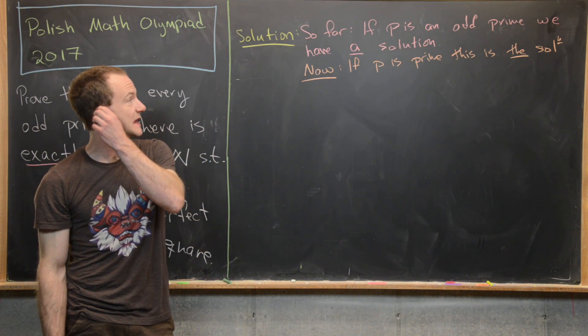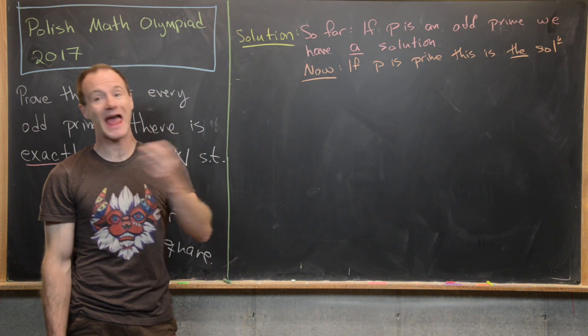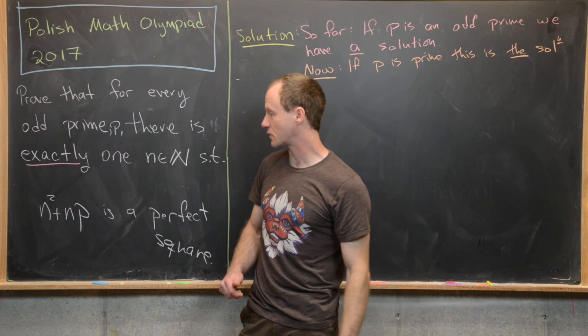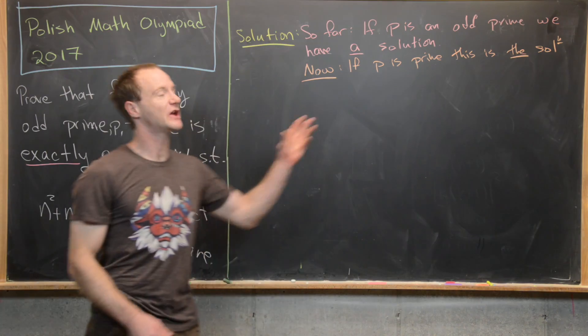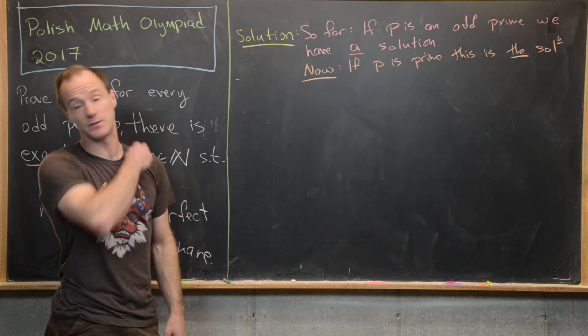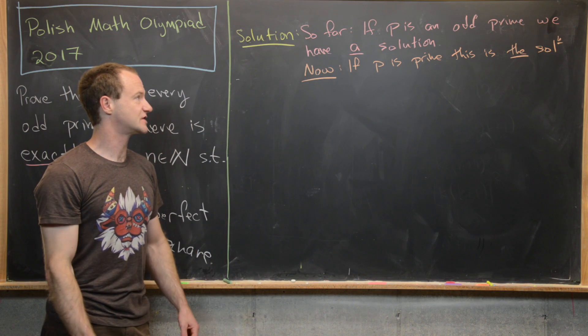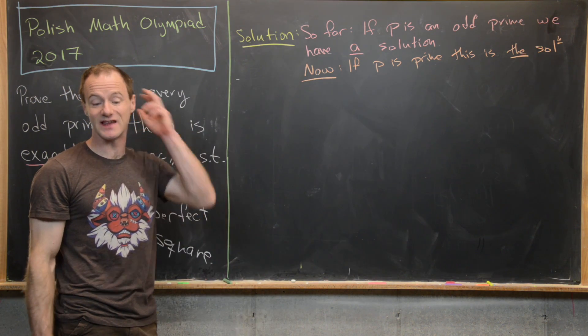Okay, so we just argued that if p is an odd prime, we have a solution to this equation. In other words, the solution when n squared plus np is a perfect square, but we only use the oddness of p—in this case, we didn't use the primeness. So what's left is to show that if p is prime, then this is the solution.